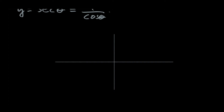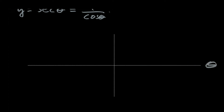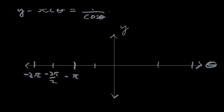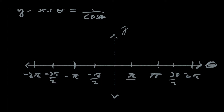So let's put down an axis — a theta-y axis. Here's the theta axis, which is our input variable, and our output variable will be a y axis. Let's put down some increments for theta involving pi: we'll have negative 2π, negative 3π/2, negative π, negative π/2, then π/2, π, 3π/2, and 2π.